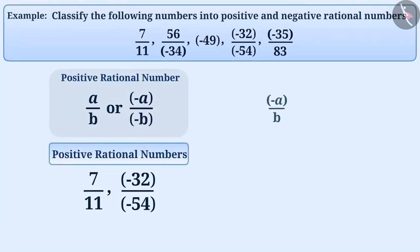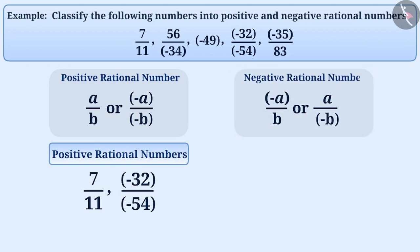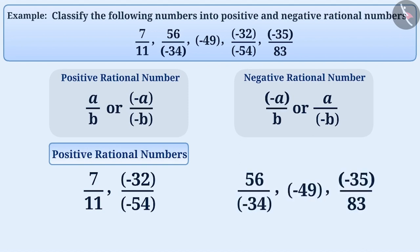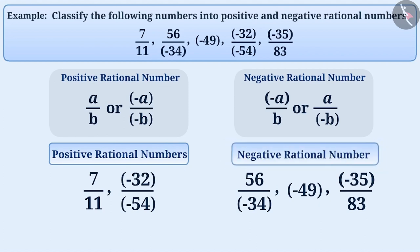Similarly, if either the numerator or denominator of a rational number is a negative integer, then it is called a negative rational number. For example, 56 by minus 34, minus 49, minus 35 by 83, etc., are negative rational numbers.